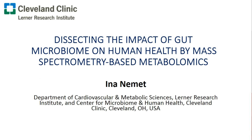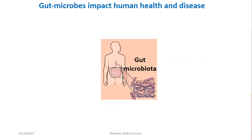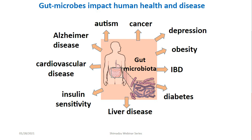100 trillion of 100 to 150,000 distinct bacterial strains reside inside the human intestinal tract. Differences in gut microbial composition have been associated with multiple diseases, such as IBD, diabetes, and obesity, but also diseases such as depression, Alzheimer's disease, cancer, and cardiovascular disease.